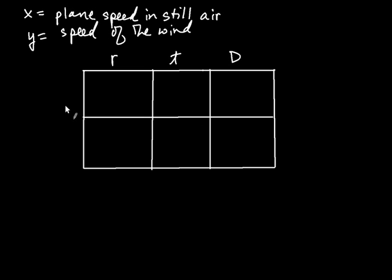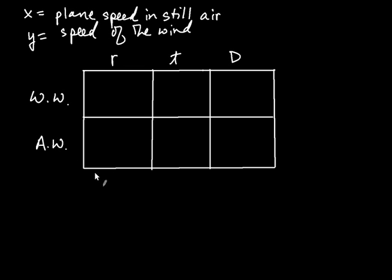Now it's time to label the rows. The rows are labeled according to the parts of the problem. We have a plane that's flying with the wind and then flying against the wind — so that's how I'm going to label these rows: with the wind, and then against the wind. You always want to think about the journey and break it up into different legs; for each leg you'll have a row.